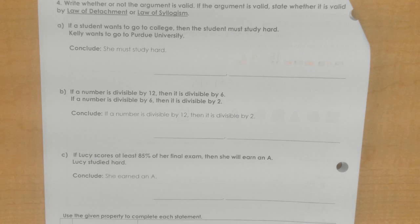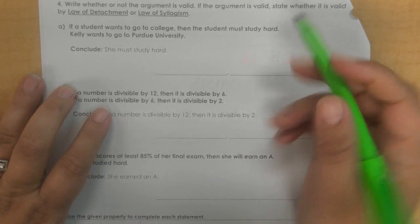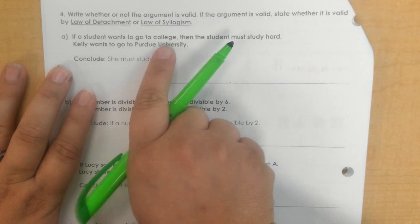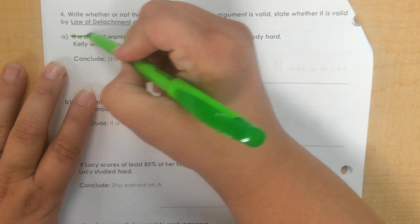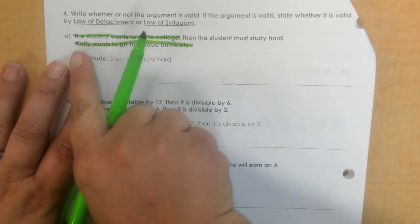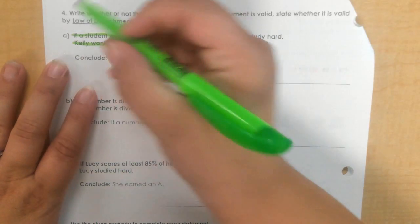Okay, for number four, we have to write this law of detachment or law of syllogism or neither. First, if a student wants to go to college, this needs to match up. Then the student must study hard. Kelly wants to go to Purdue University, so it's saying a student wants to go to college.